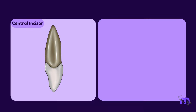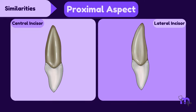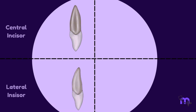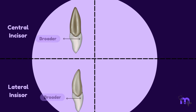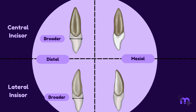The maxillary centrals and laterals also have some similarities when viewed from the proximal aspect. It is interesting to note that in both the central and lateral incisors, a line drawn through the centre of the root nearly bisects not only the apex of the root but also the incisal ridge of the crown. Additionally, both teeth exhibit a broader appearance on the distal side when compared to the mesial side — a feature attributed to their alignment within the dental arch, which influences their overall shape.